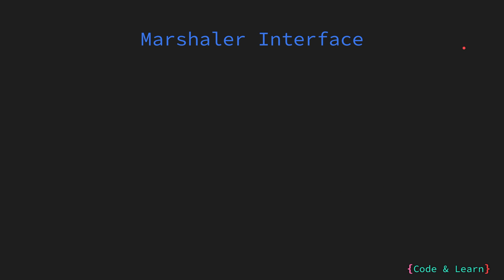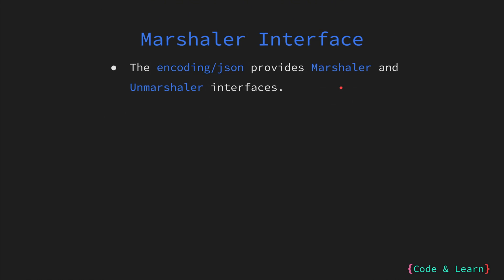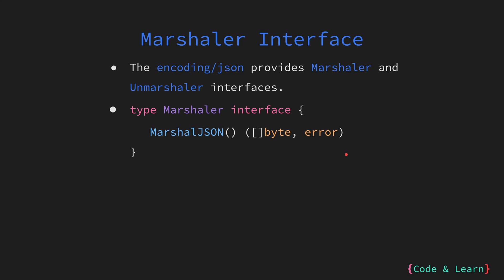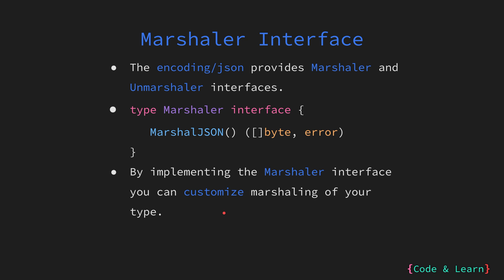First, let us look at the marshaller interface. The encoding JSON standard library package provides the marshaller and unmarshaller interfaces that allow you to customize the behavior of marshalling and unmarshalling of your custom-defined types by implementing these interfaces. We have the marshaller interface, which has a single method called MarshalJSON, returning a byte slice or an error. By implementing the marshaller interface, you can customize how your custom type is marshalled or converted into JSON data.